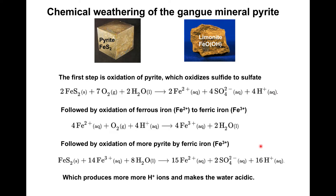We also talked about chemical weathering of the gangue mineral pyrite. The key point is that when we start with pyrite—FeS₂ or iron sulfide—all of these reactions produce hydrogen. The more hydrogen contained in water, the more acidic that water is.